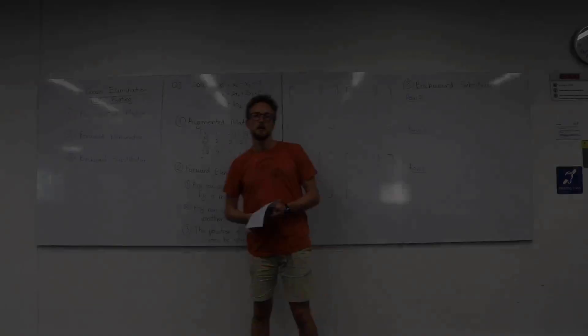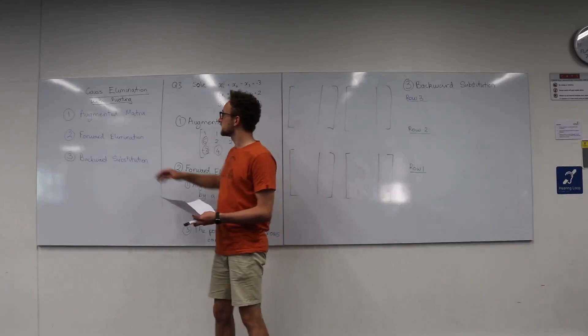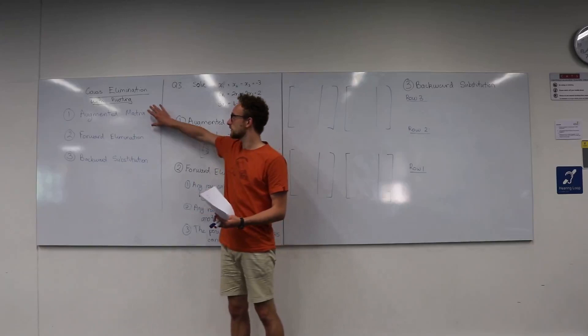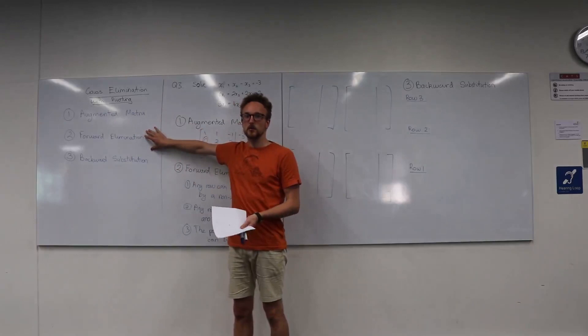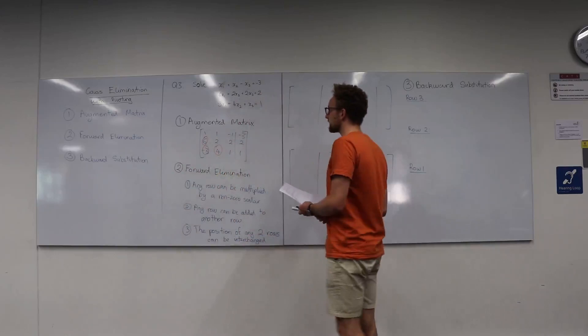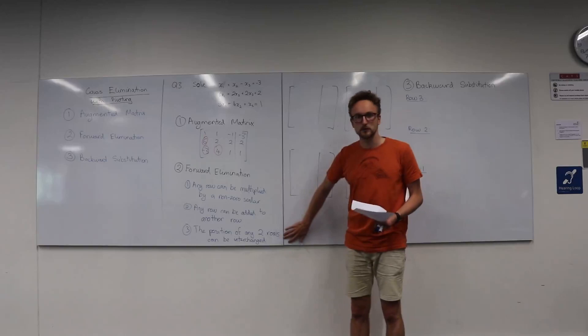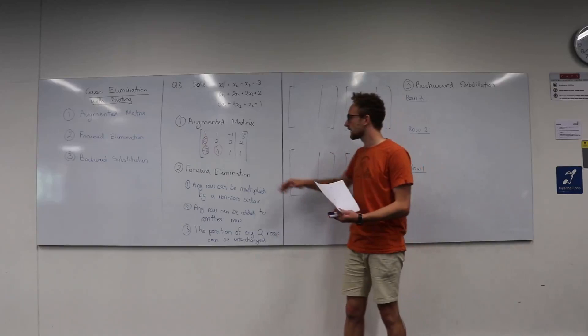When we introduce pivoting into Gauss elimination, our steps remain unchanged — we still transform to an augmented matrix, perform forward elimination, then use backward substitution. The difference is that in our forward elimination, we introduce another rule: the position of any two rows can be interchanged. So I can swap rows 3 and row 1, or swap row 1 and row 2, etc.